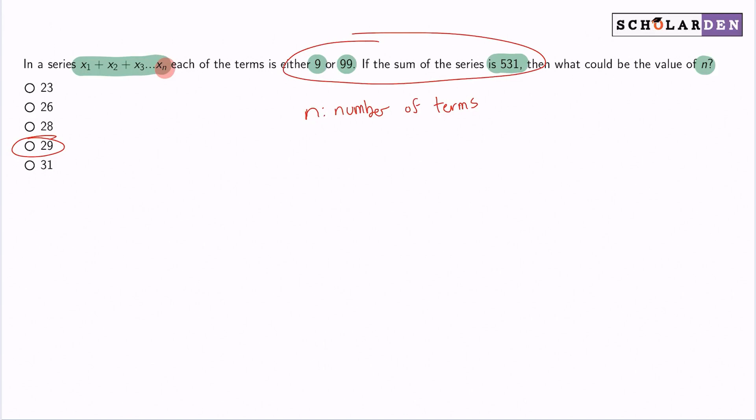Now, one thing that you want to notice is that 9 and 99 share a common factor of 9. So what that means is, if you're adding a bunch of 9s and a bunch of 99s, that 531, the sum, is also divisible by 9. Because if you have a bunch of 9s added with a bunch of multiples of 9, the result is going to be divisible by 9.